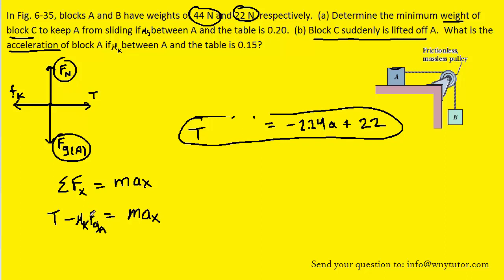But of course, FG for block A is the same thing as MG. Let's substitute in known values. Let's also remember that the tension was given by this expression. So we can replace tension in our current equation with the expression negative 2.24 A plus 22. So doing that and filling in known values, we have the following.